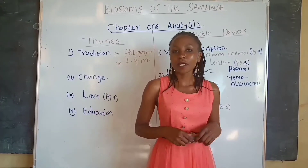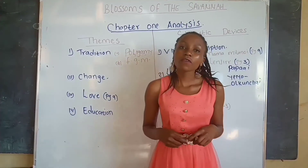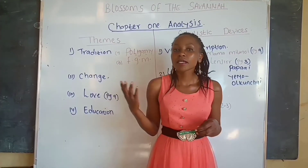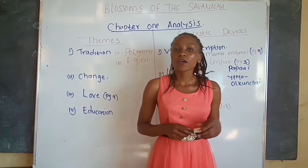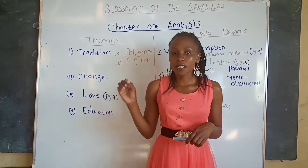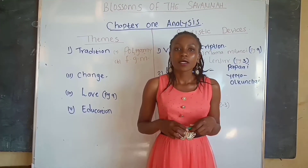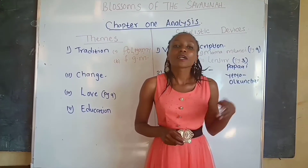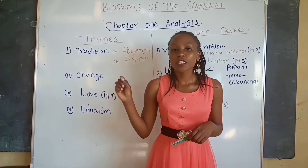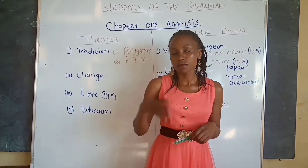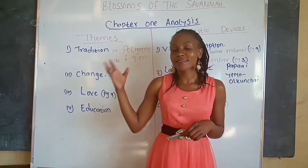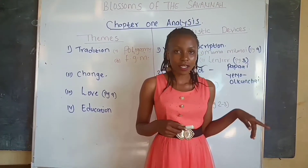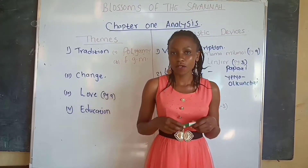The second way tradition is presented is through female genital mutilation. When girls in Maasai land or in Nasila reach a certain age, they are supposed to undergo the cut. That is why the two daughters of Ole Kaelo, Taiyo and Resian, are referred to as Intoiye Nemengalana, which means uncircumcised girls, because at their age they are supposed to have undergone the cut, but they have not.